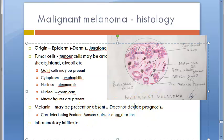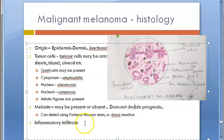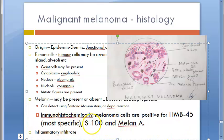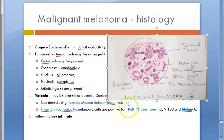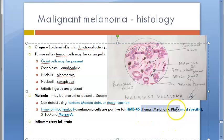On immunohistochemistry, melanoma cells are positive for HMB45 (human melanoma black — the most specific marker), S100, and Melan-A. Melan-A is easy to remember because it resembles 'melanoma.' HMB45 stands for human melanoma black and is the most specific immunohistochemical marker for melanoma.